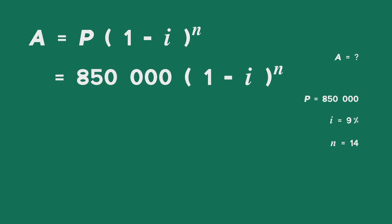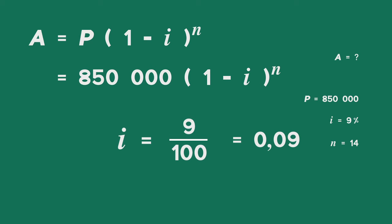A is equal to 850,000 times 1 minus I raised to the power of N. I is 9%, but I is in a decimal form. Remember, you only use decimal forms in your actual calculations.